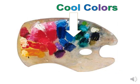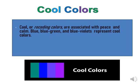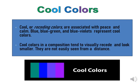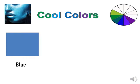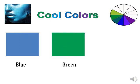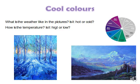Now we have the cool colors. This is the palette showing the cool color part. Cool or receding colors are associated with peace and calm. Blue, blue-green and blue-violet represent cool colors. Cool colors in a composition tend to visually recede and look smaller — they are not easily seen from a distance. The three cool colors are blue, green and violet.